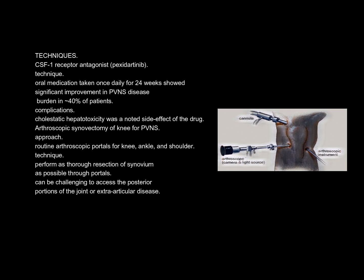Arthroscopic synovectomy of the knee for PVNS — Approach: routine arthroscopic portals for the knee, ankle, and shoulder. Technique: perform as thorough a resection of the synovium as possible through the portals. It can be challenging to access the posterior portions of the joint or extra-articular disease.